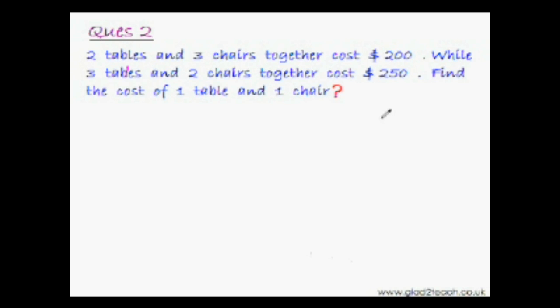So now let me do it. Like always let the cost of one table be x and one chair be y. Rather we can use the alphabets t and c. So let the cost of one table be t and cost of one chair be c. Two tables and three chairs together cost 200 dollars. So our first equation would be 2t plus 3c equal to 200. And similarly the second equation would be 3t plus 2c equal to 250. So we have successfully created the two simultaneous equations.